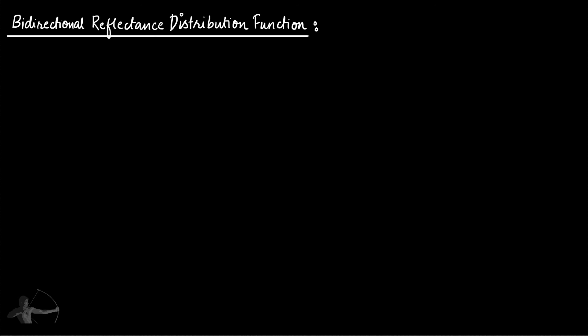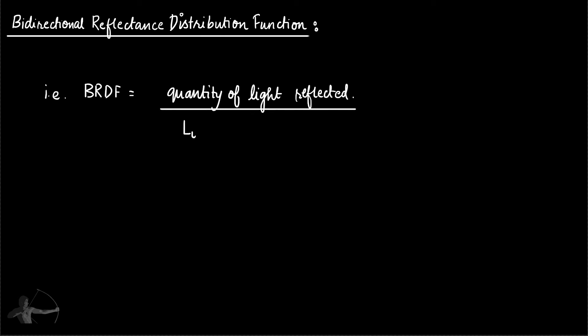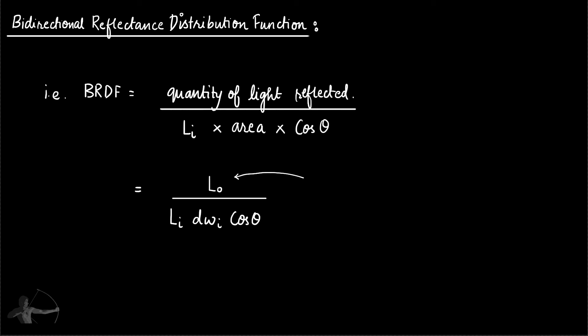This gives us BRDF = Lo / (Li × dωi × cos theta), where Lo is the direction of outgoing reflected light and dωi is the area of the differential solid angle. In many mathematical papers this equation of BRDF is represented in this form, so you don't have to be scared of these mathematical symbols — you just need to understand what is going on. The value of BRDF is not bound between 0 and 1 as it is for diffuse reflections.